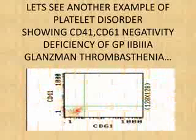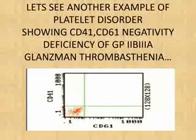Let's do another example. Look at this dot plot. The majority of the cell population is falling in the double negative quadrant, showing CD41 negativity and CD61 negativity. This is Glanzmann's thrombasthenia — showing CD41 and CD61 negativity, indicating deficiency of GP2B3A. CD41 is a marker of GP2B and CD61 is a marker of GP3A; combined, these are the markers of glycoprotein GP2B3A. This platelet cell population falling under the double negative quadrant means the platelets are deficient for CD41 and CD61, showing GP2B3A deficiency.